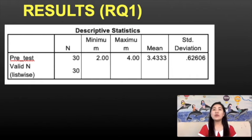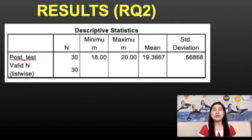For the result of research question number 1 with regards to the pre-test, the mean is 3.4333 and the standard deviation is 0.62606. For the result of research question number 2 with regards to the post-test, the mean is 19.3667 and the standard deviation is 0.66868.